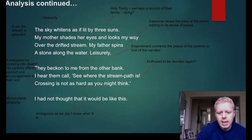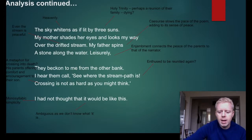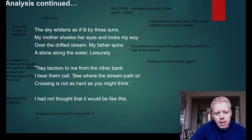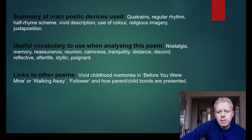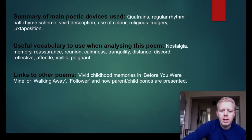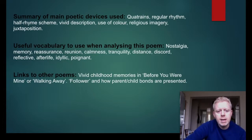Plenty there for you to sink your teeth into and get your top grades in any answer. Obviously it's a comparison question, so do check the comparative videos — I go through quite a few practice questions, and I'm sure 'Climbing My Grandfather' at Eden Rock is in one of those. A brief summary of the main poetic devices used: quatrains, regular rhythm, half rhyme scheme, vivid description, use of colour, religious imagery, and juxtaposition. Do remember that you have to explore the meanings of these poetic devices, but I've shown you how to do that.